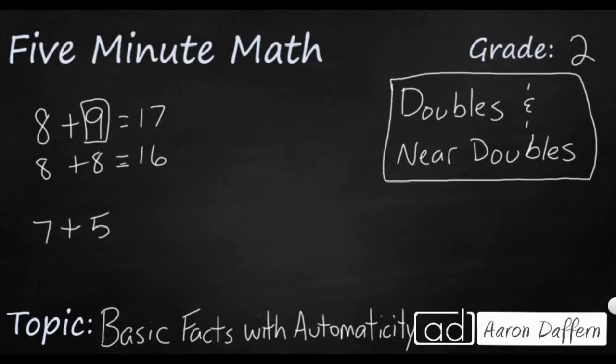Same with this down here. This is another near doubles. But in this case, I'm going to think, I'm going to change this to a 5. I'm going to say 5 plus 5. That's an easy 10. Then I've got to think, well, this 7 is two more than 5. So I need to add 2. So I'm going to take my 10, and I'm going to make it a 12.